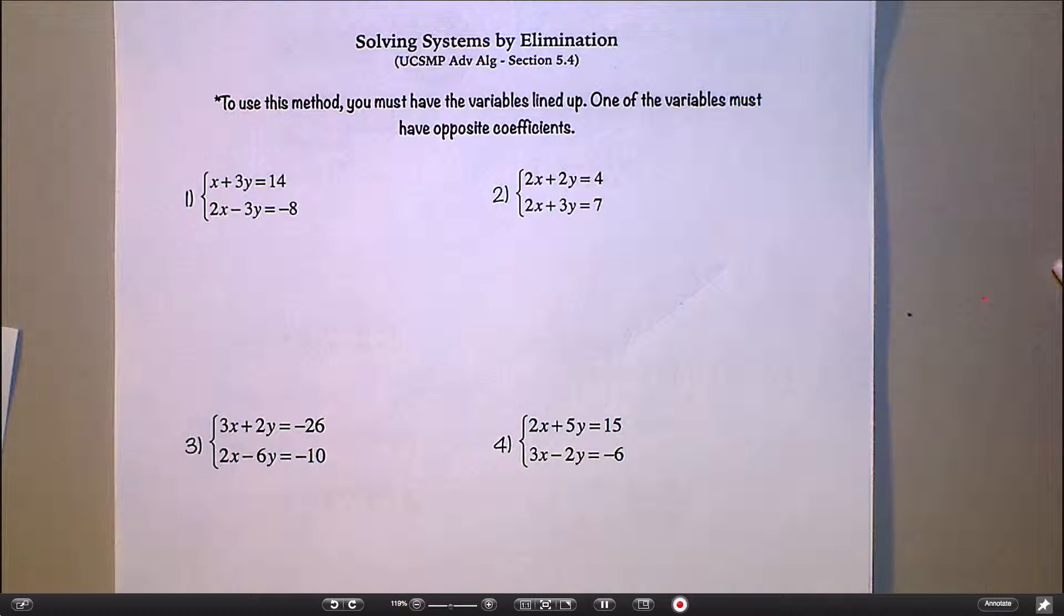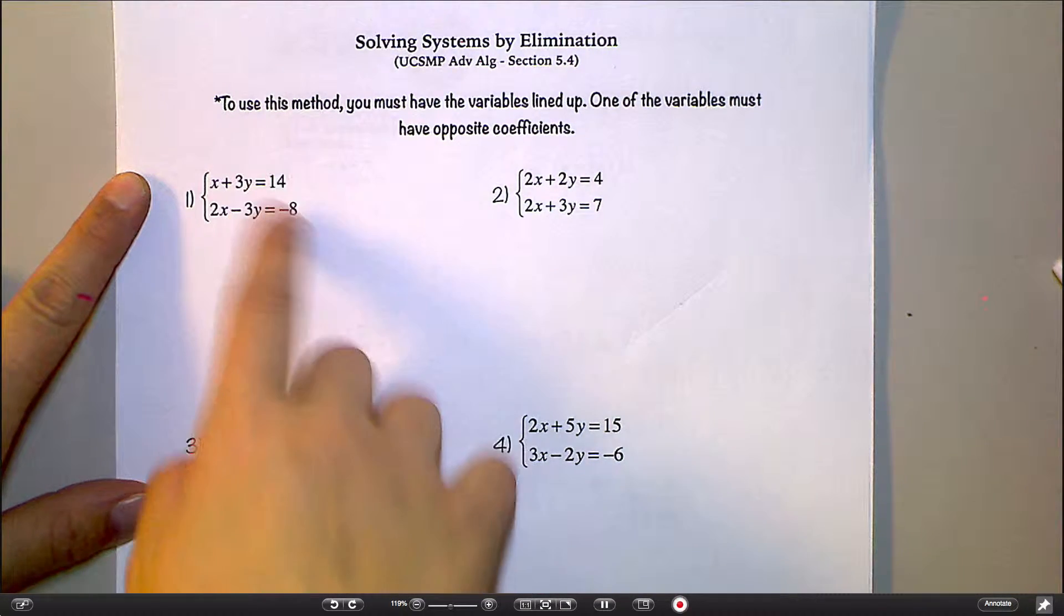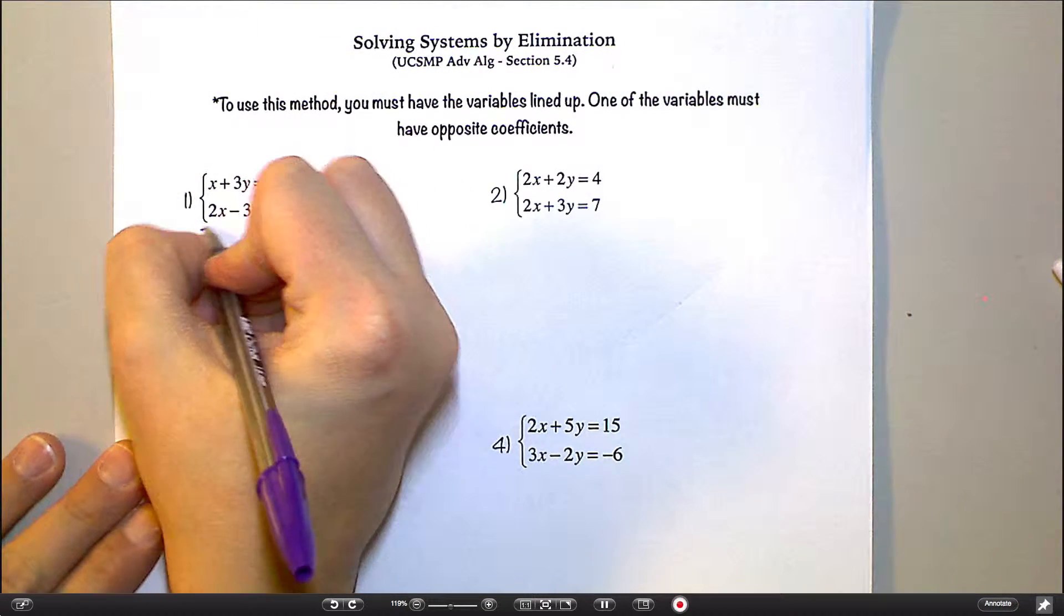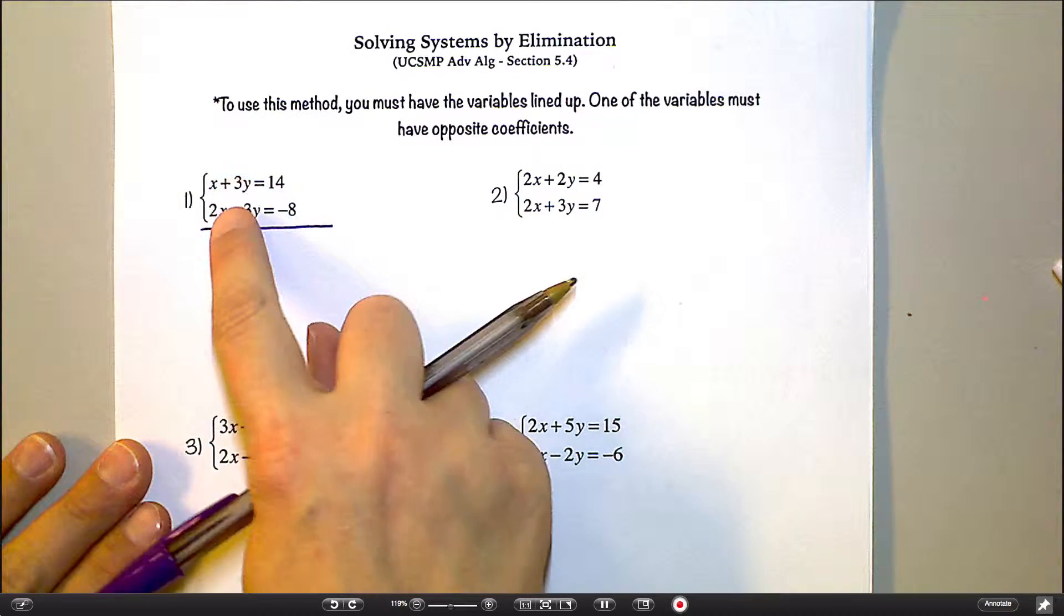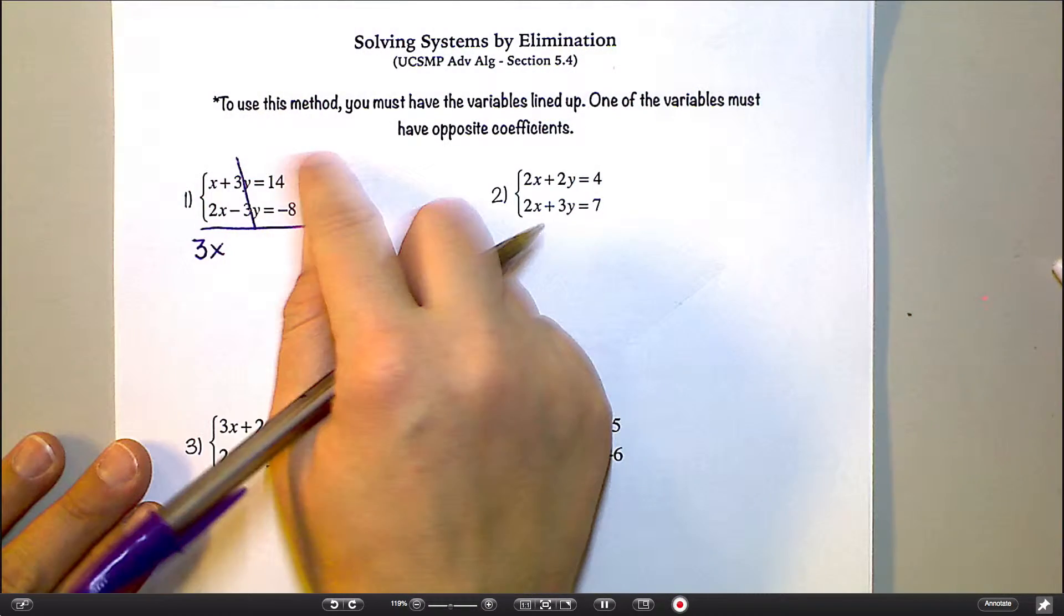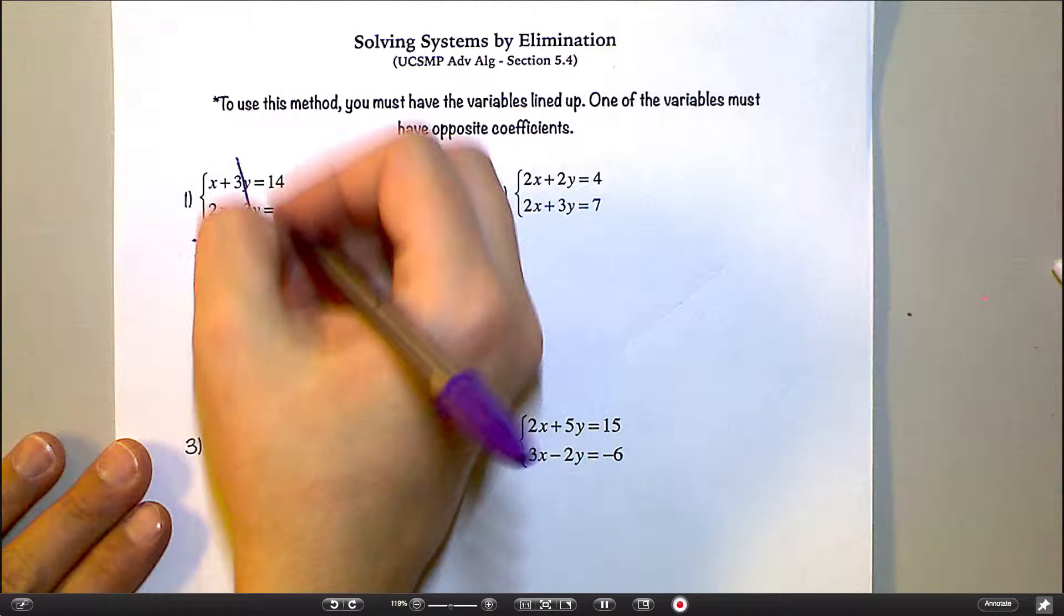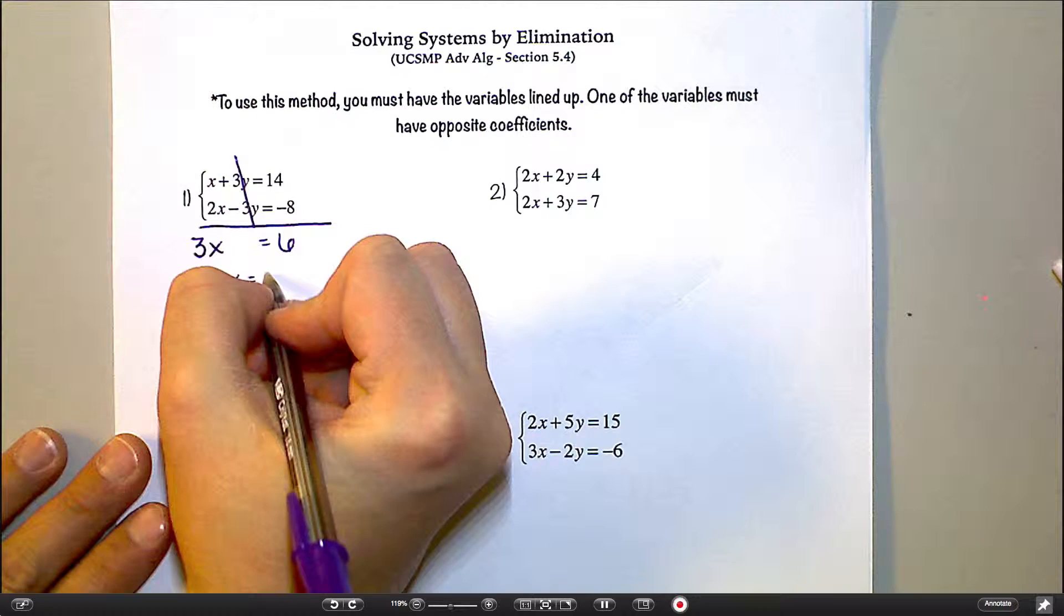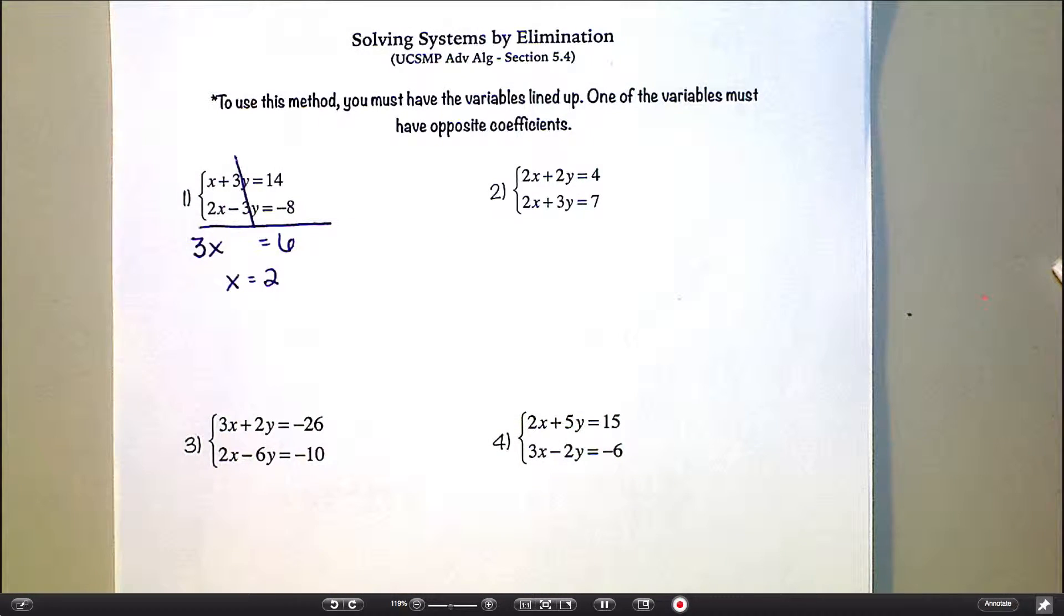So in that first example, if I combined going up and down, do you see that my 3y and my minus 3y are going to cancel out? That's what we want to have happen. So that one's really convenient that it's set up that way for you. I must have thought, gosh, let's start with a nice easy one. So here's what I'm going to do. I'm going to add going up and down. So x plus 2x is 3x. 3y and negative 3y cancel. And then 14 plus negative 8 or 14 minus 8 is 6. So then what does x equal? So see, that kind of accomplishes the same thing. It makes it so you're only working with one variable. Just sort of the whole idea. So we get that x equals 2. Easy, right? But that one was convenient, too.